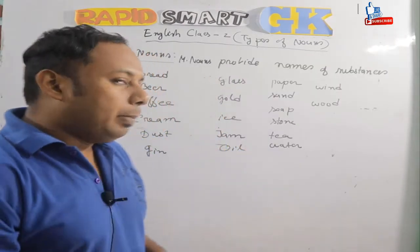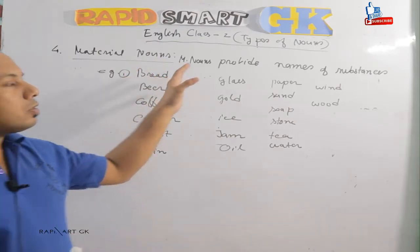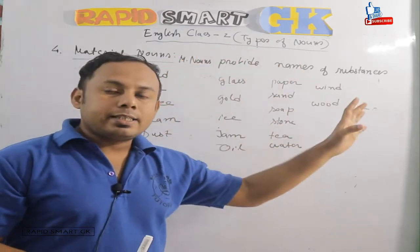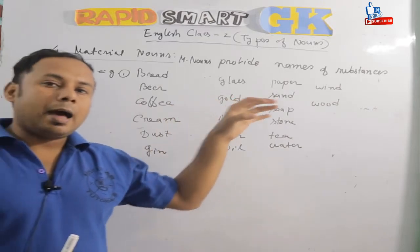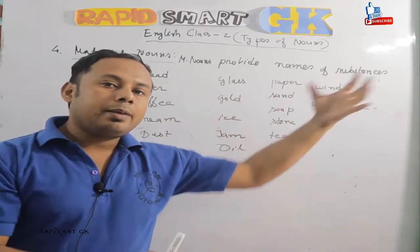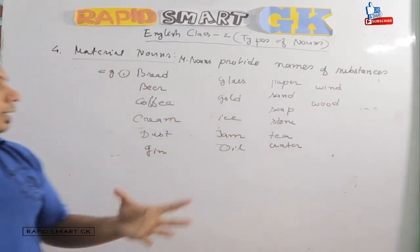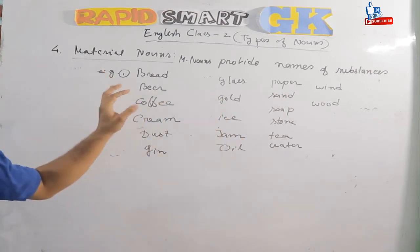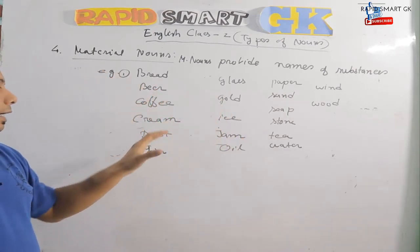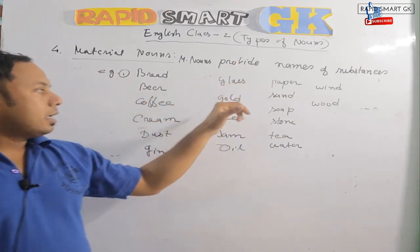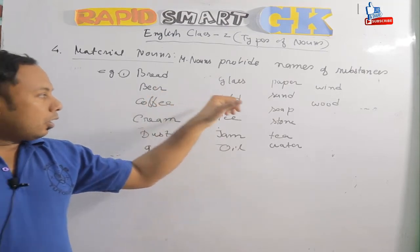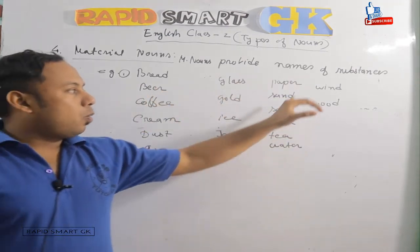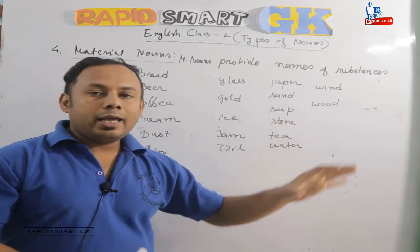A material noun is formed by the names of substances. For example: bread, beer, coffee, cream, dust, gin, glass, gold, ice, jam, oil, pepper, sand, salt, tea, water, wine, wood. These are all examples of material nouns.